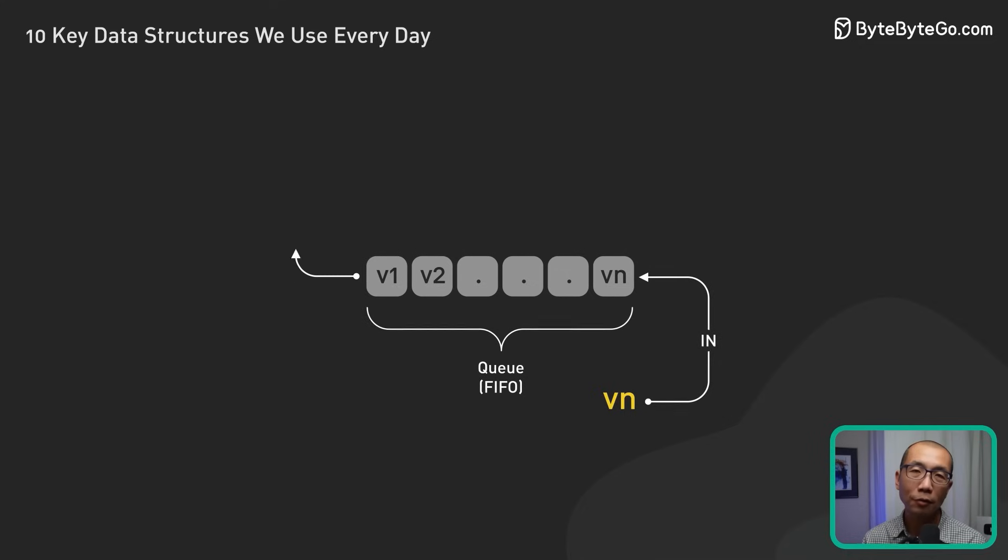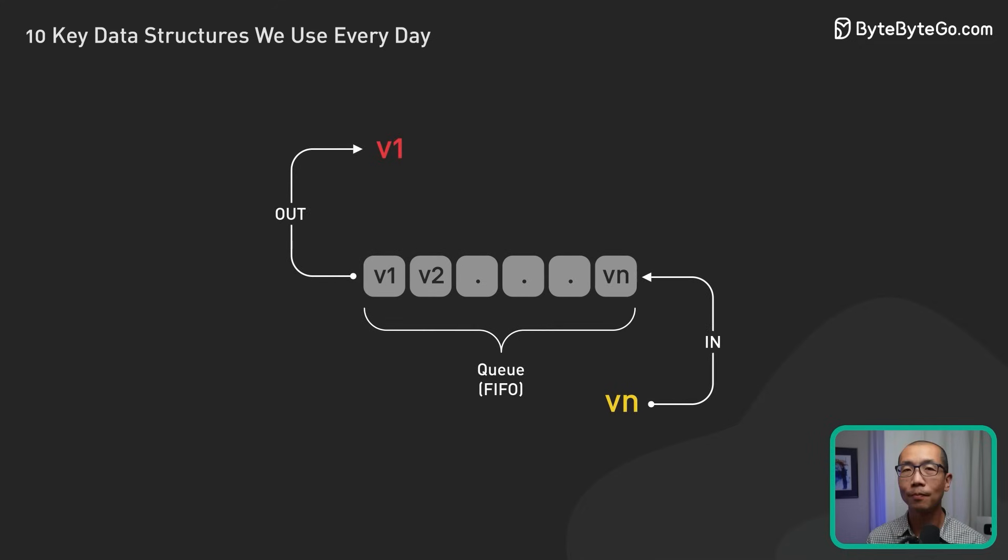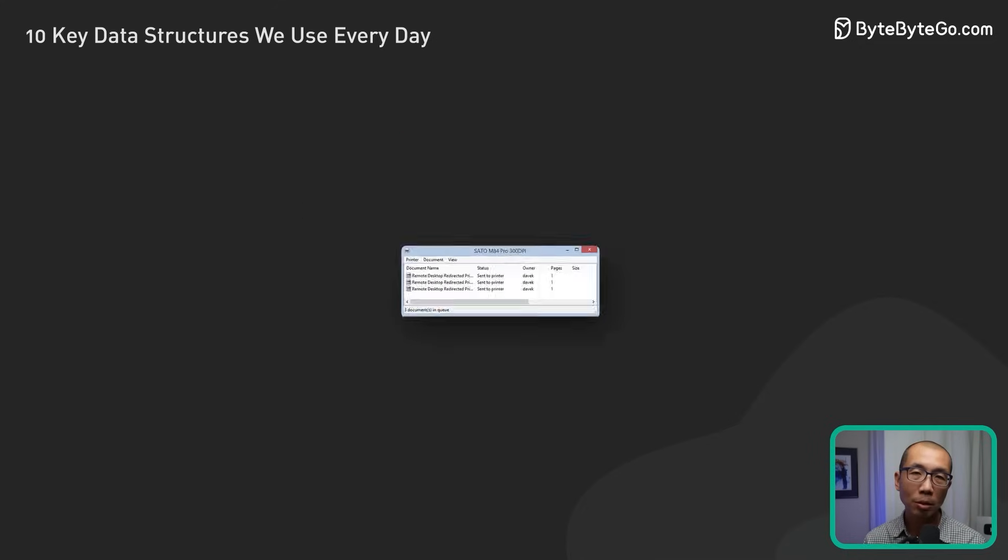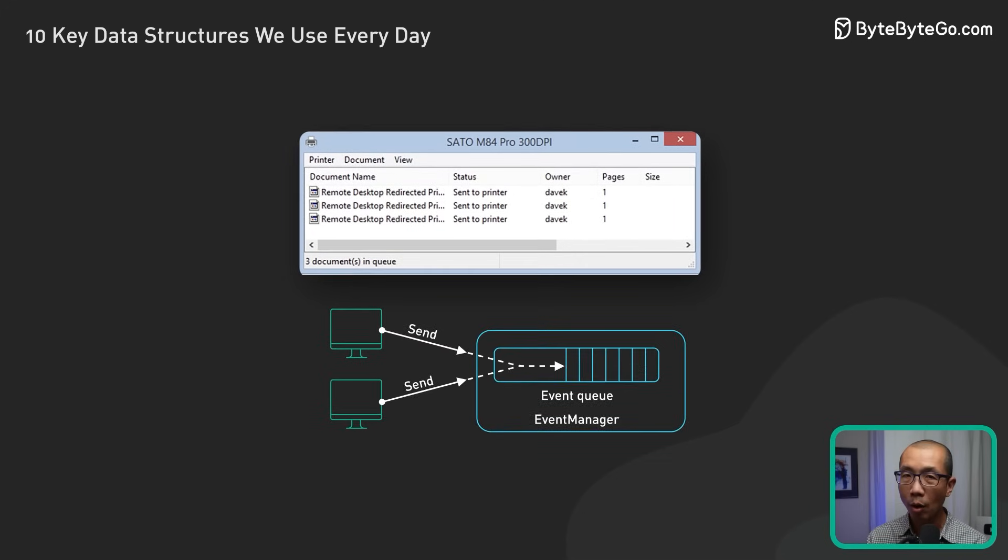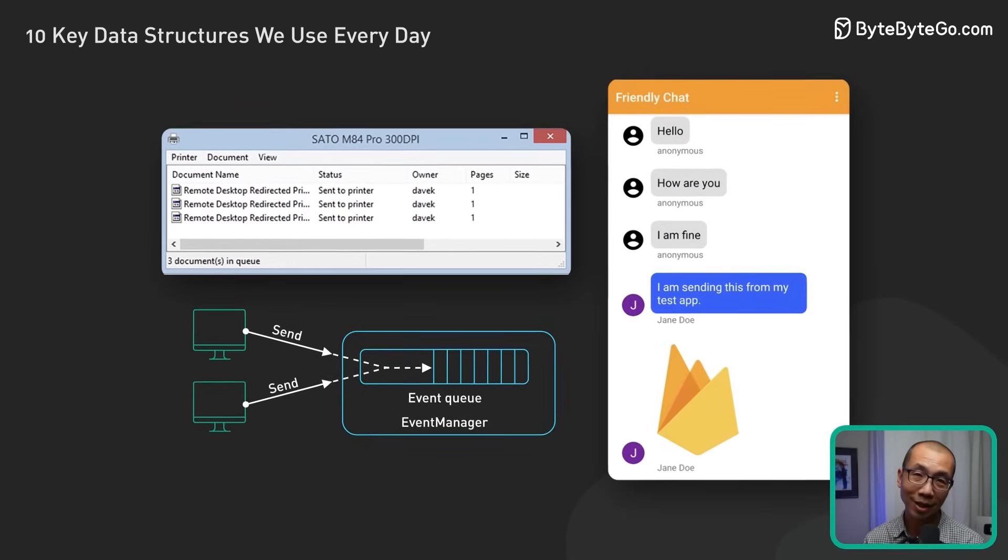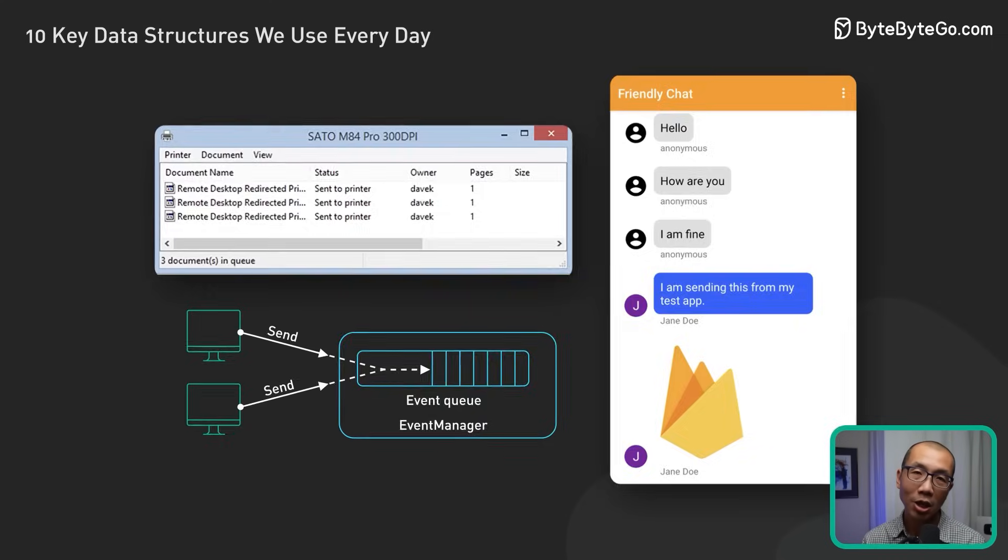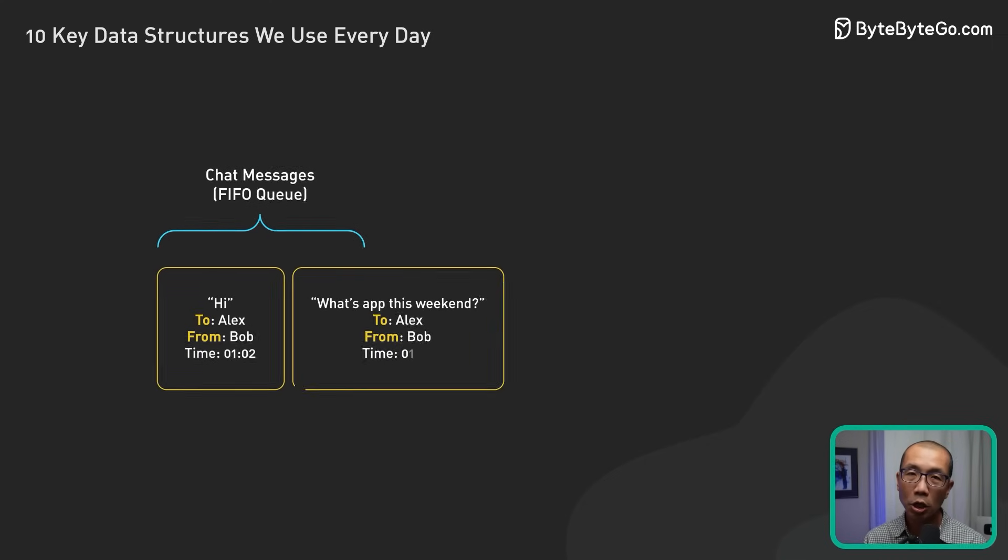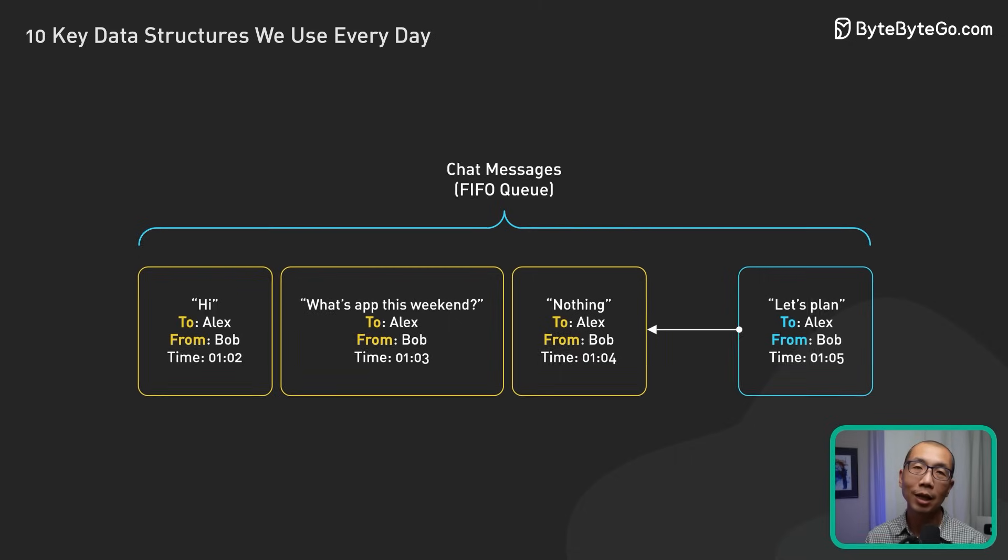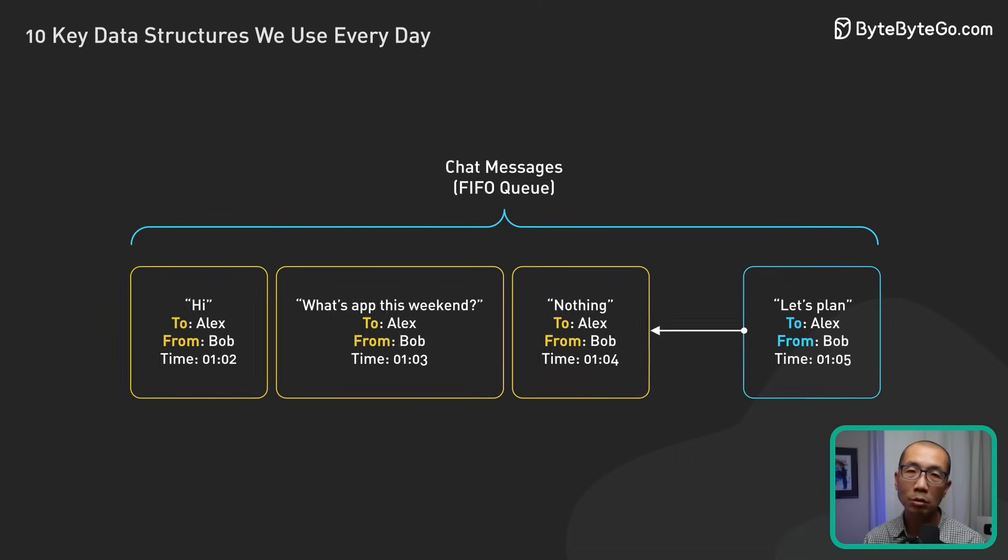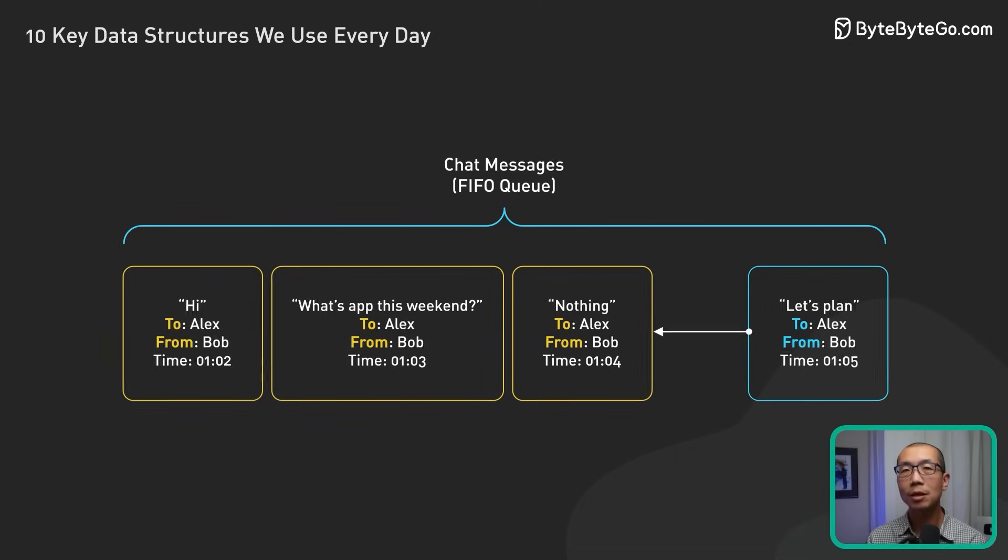Queues operate on a first-in, first-out basis. They are good for managing printer jobs, sending user actions in games, or handling messages in chat applications. In chat applications, a queue can be used to store incoming messages in the order they are received. It ensures that they are displayed to the recipient in the correct sequence.